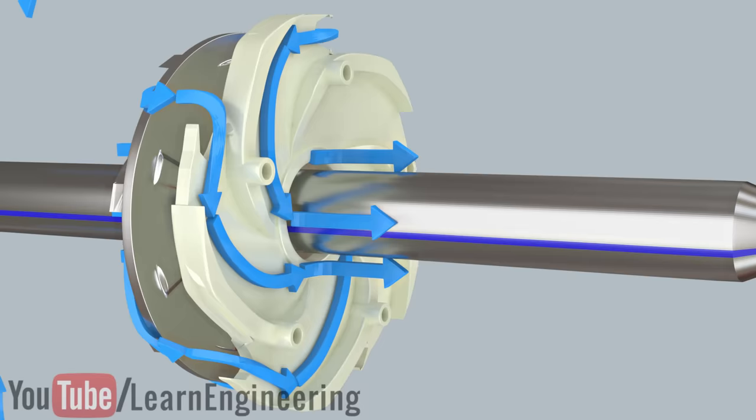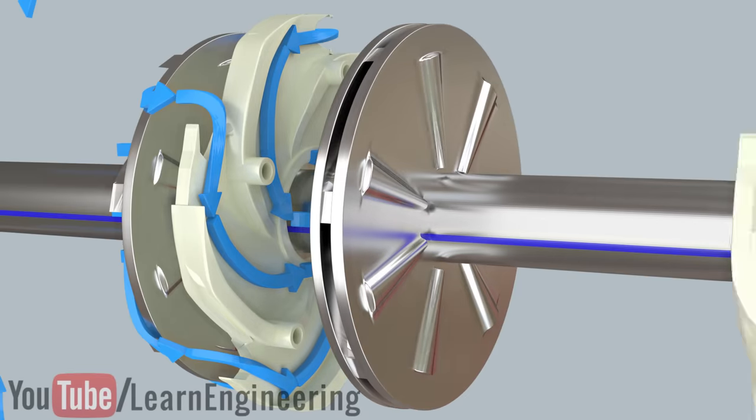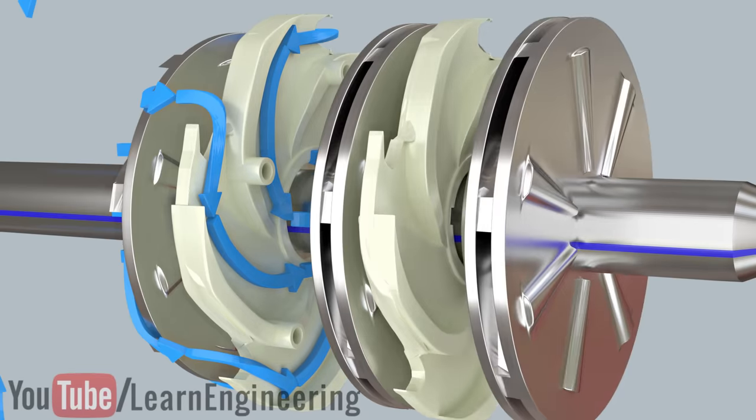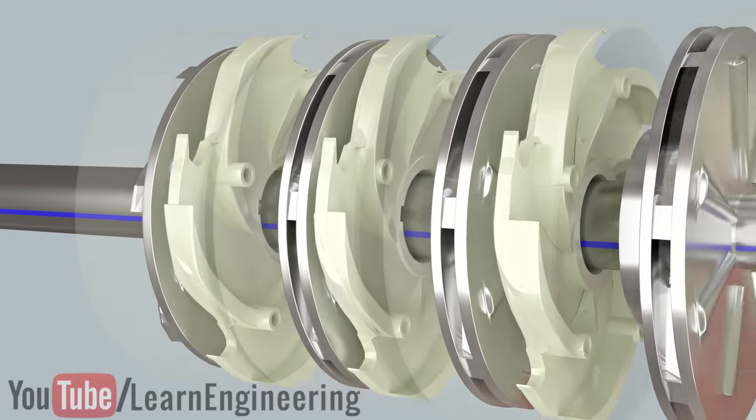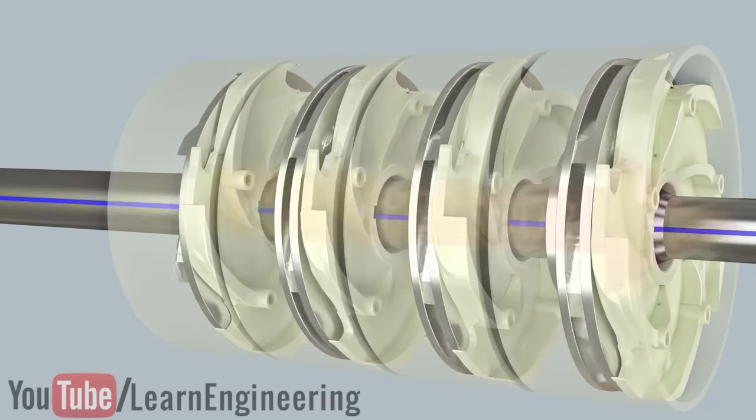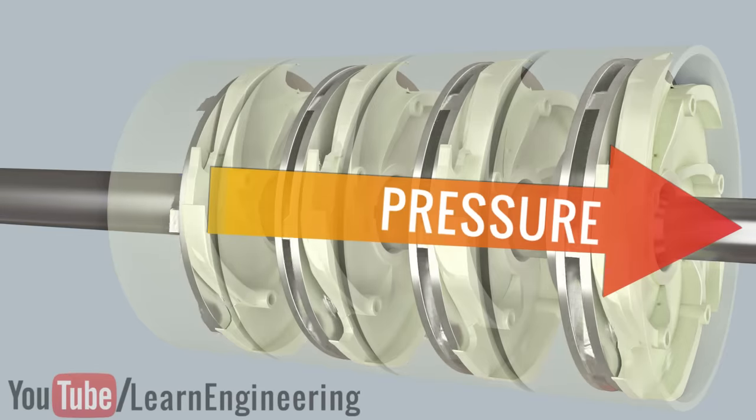The next impeller is connected to the outlet of this diffuser. The series of connected impellers multiplies the pressure gain at each stage. This is the reason why submersible pumps produce a huge amount of pressure head.